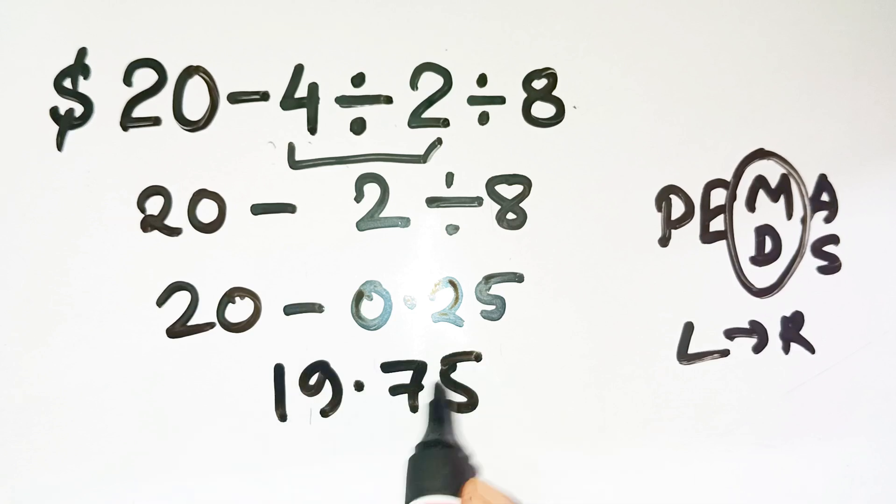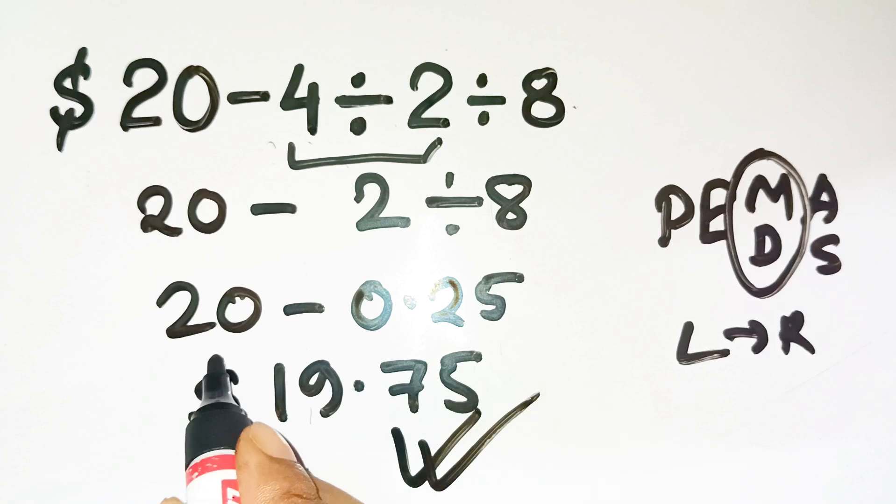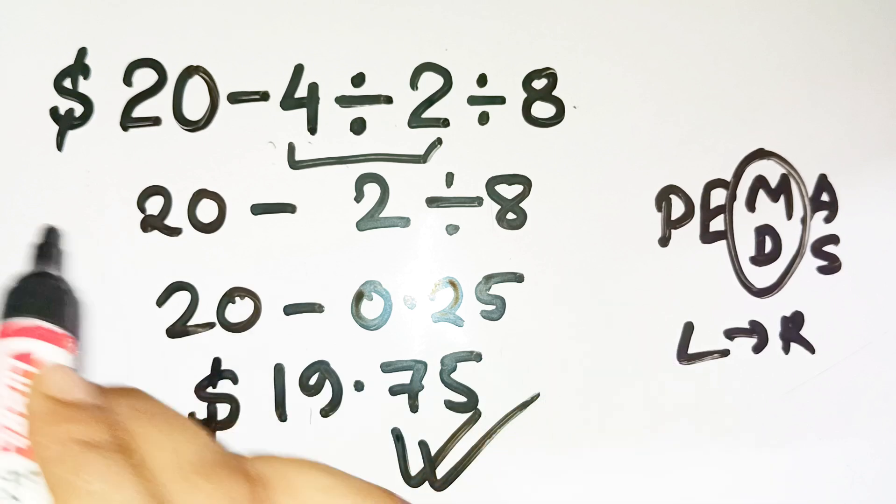Yep, that's it. The correct answer is $19.75, not $1. Kind of wild, right? The math never lies, it's just the order that tricks people.